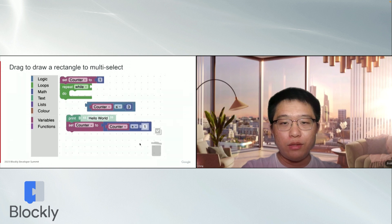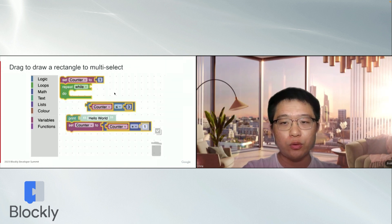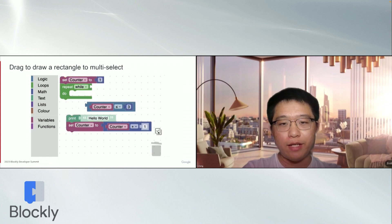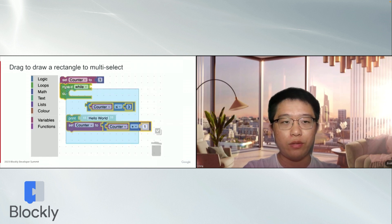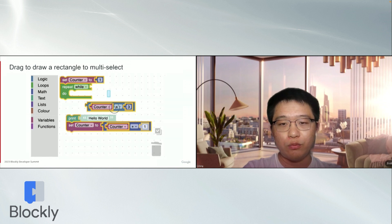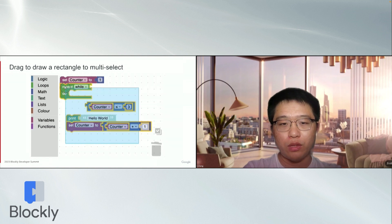When in MultiSelect mode, we can also drag to draw a rectangle to select blocks. We can select or deselect the blocks touched by the rectangle area. In MultiSelect mode, workspace dragging and block dragging will all be disabled. We can only drag to draw a rectangle for selection.